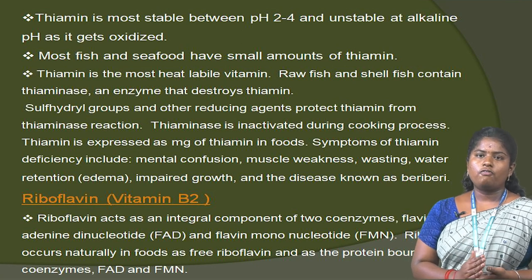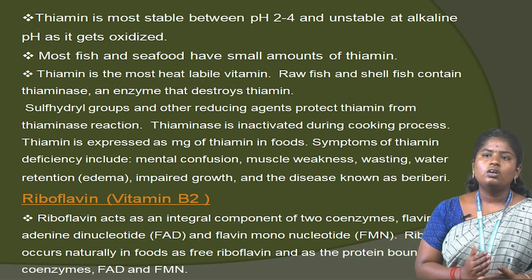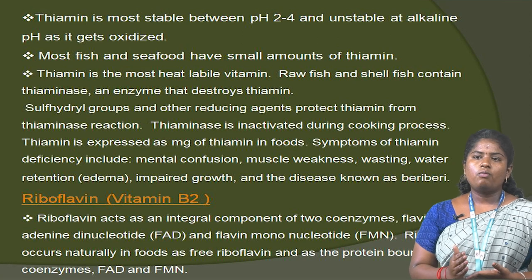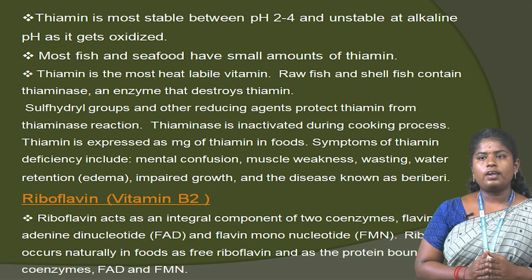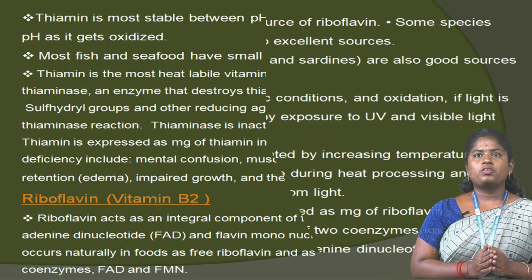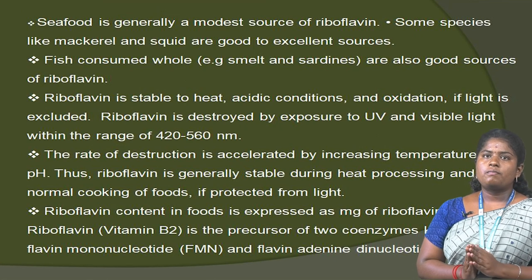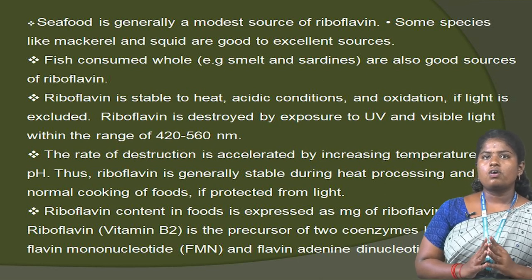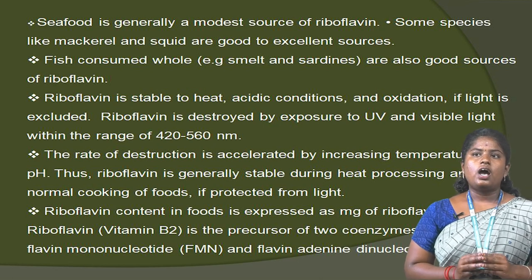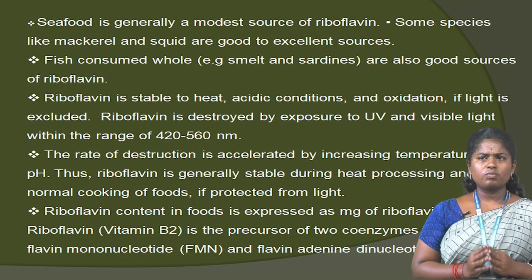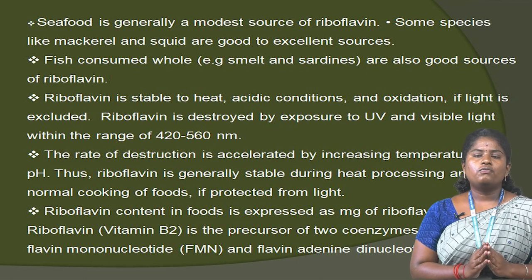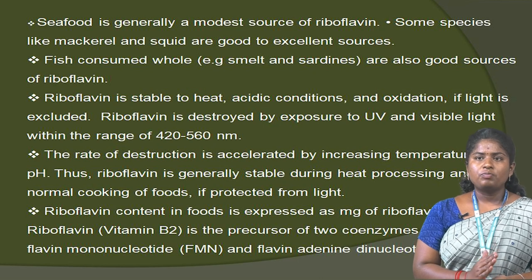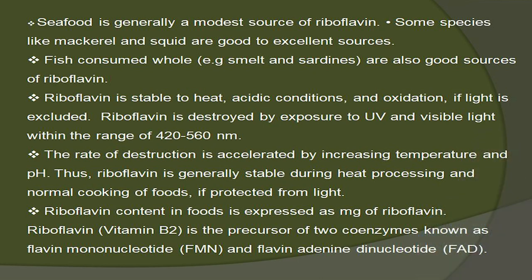Riboflavin, also called vitamin B2, acts as an integral component of two coenzymes: flavin adenine dinucleotide (FAD) and flavin mononucleotide (FMN). Riboflavin occurs naturally in food as free riboflavin and as protein-bound coenzyme forms FAD and FMN. Seafood is generally a modest source of riboflavin. Some species like mackerel and squid are good sources. Fish consumed whole, such as smelt and sardines, are also good sources of riboflavin. Riboflavin is stable to heat, acidic conditions and oxidation. However, it is destroyed by exposure to UV and visible light in the range of 420 to 560 nanometers. The rate of destruction is accelerated by increasing temperature and pH. Thus, riboflavin is generally stable during heat processing and normal cooking if protected from light.